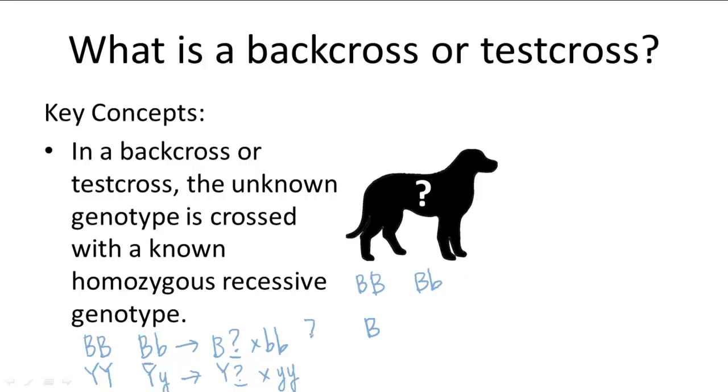So this is the same deal as here. It's big B, blank, uncertain, times little B, little B. And this is your brown dog with the homozygous recessive genotype.